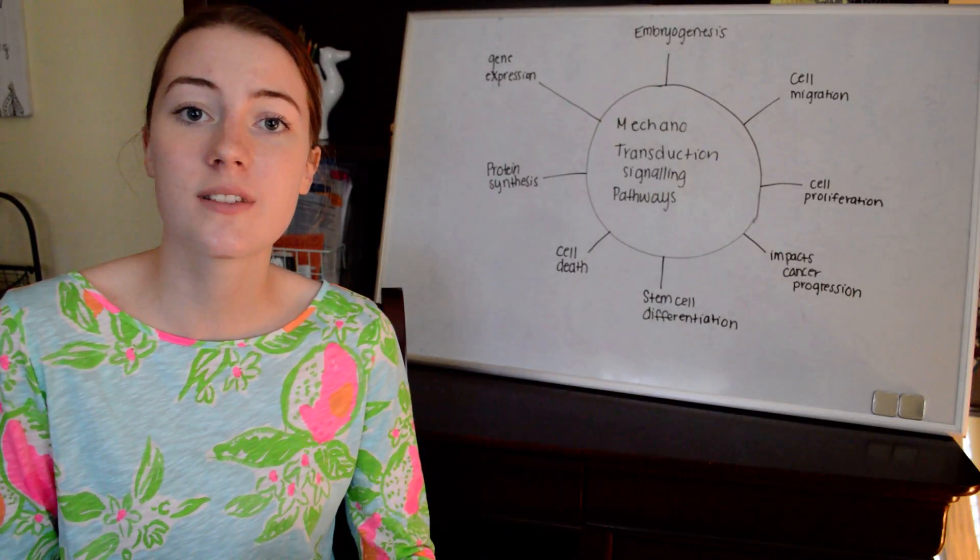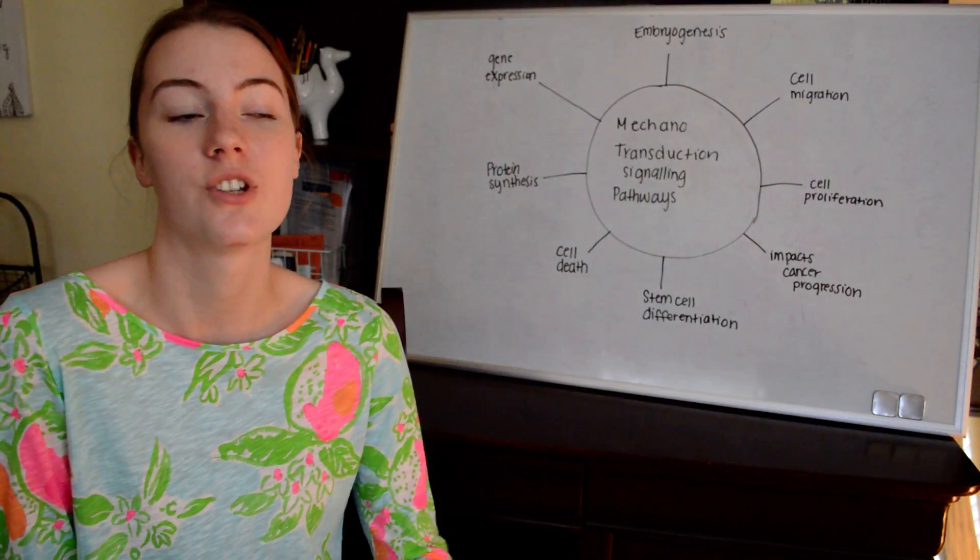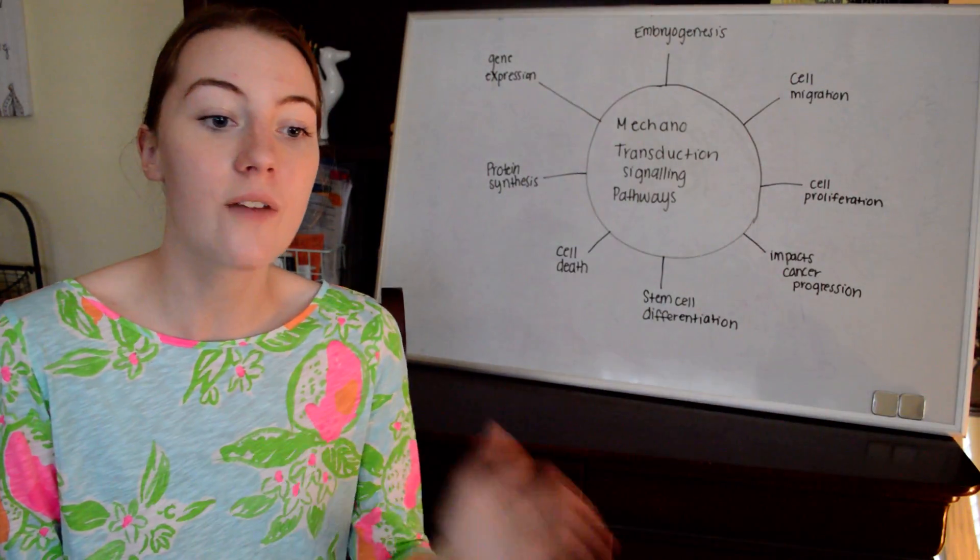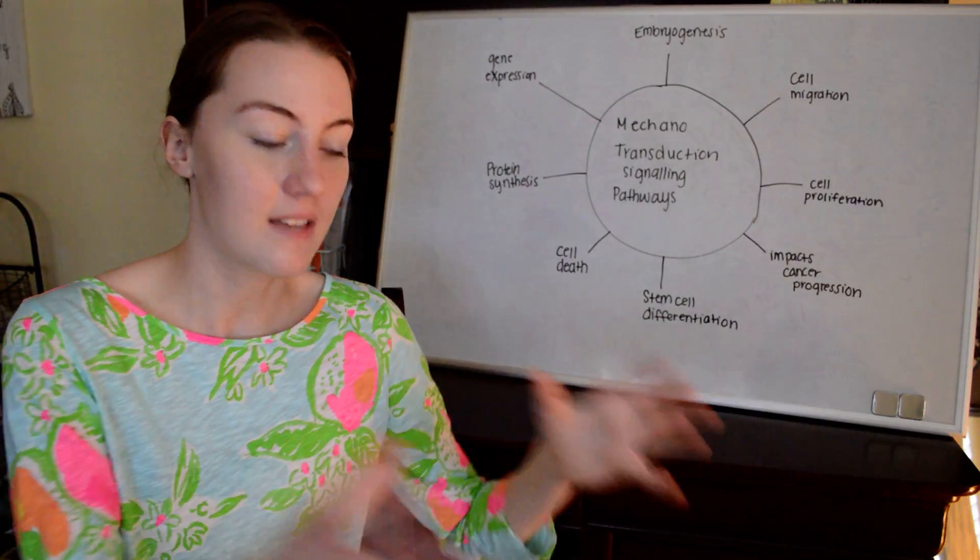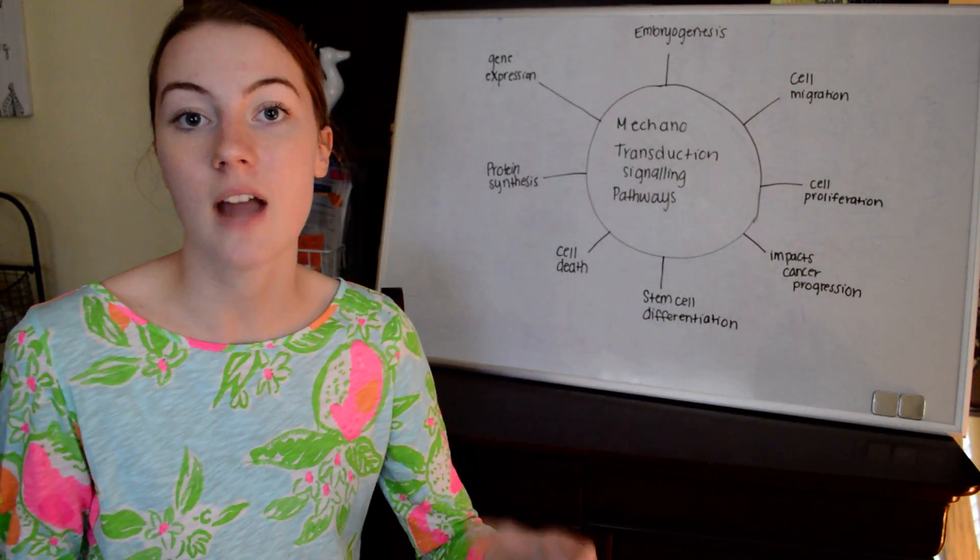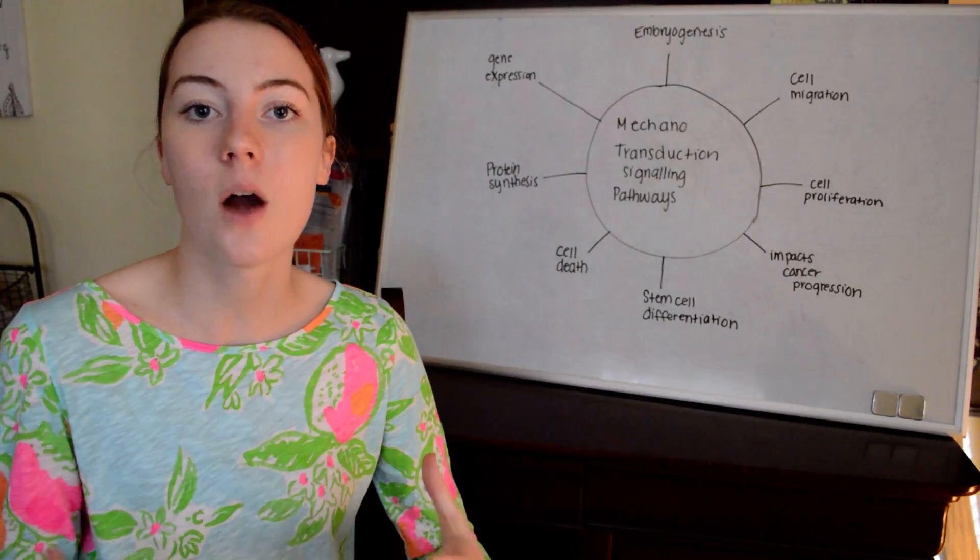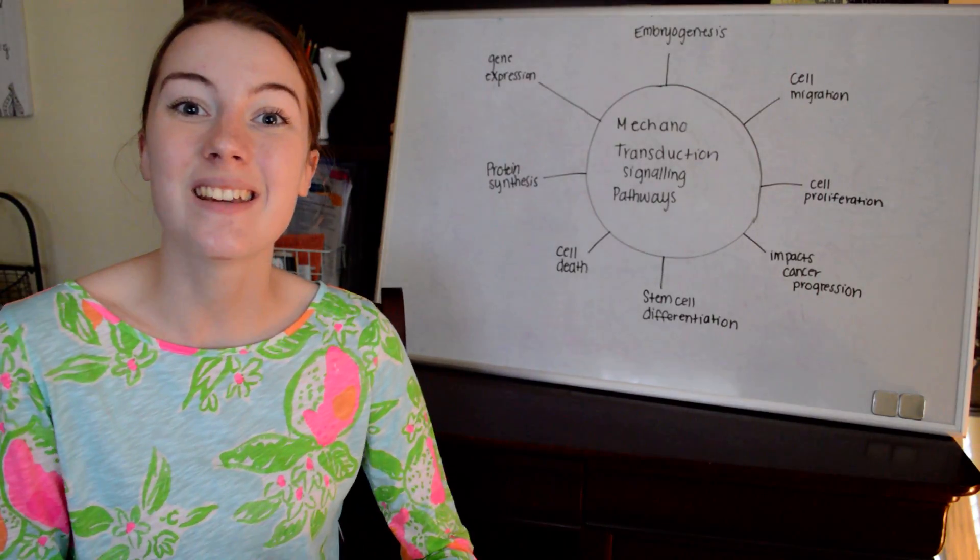So in conclusion, mechanotransduction is the cornerstone of healthy cell function. It's incredibly important from every aspect of life at every stage of life. And it's responsible for basic things like our senses to huge things like how we develop our nervous system, what genes are expressed, and how we're able to grow and function. Thank you.